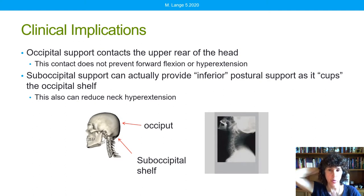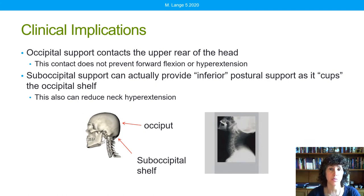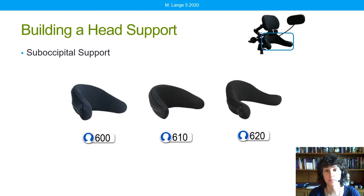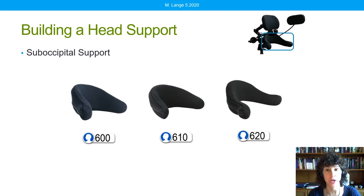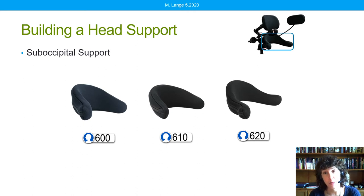If this suboccipital support — and you might want to go ahead and grab the back of your head here — is in just the right spot, it's really just about impossible to hyperextend your head. As part of a head support system, we can choose to incorporate a suboccipital support. Here in the upper right picture we have an Ultra from Stealth Products, and there is an occipital support, a separate suboccipital, shown in three sizes, as well as lateral supports. So we can custom build this through a modular approach to best meet an individual's needs.